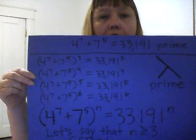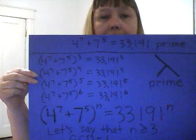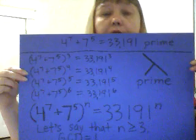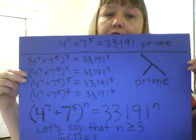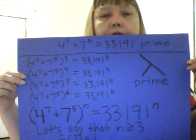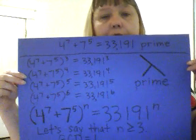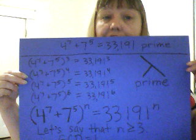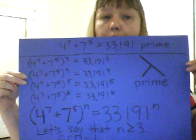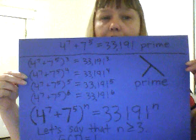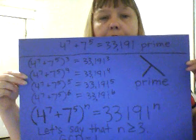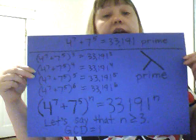4 to the 7th plus 7 to the 5th equals 33,191 — a prime number. This is my basic equation. I'm going to take it to the 3rd, 4th, 5th, 6th — any power I want it to be. Let's say that n is greater than or equal to 3. GCD equals 1.